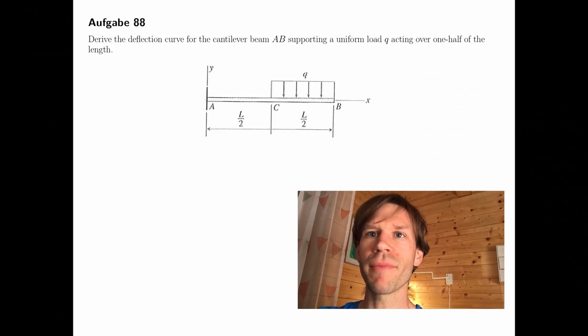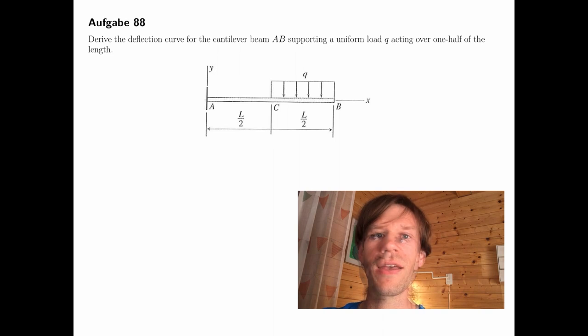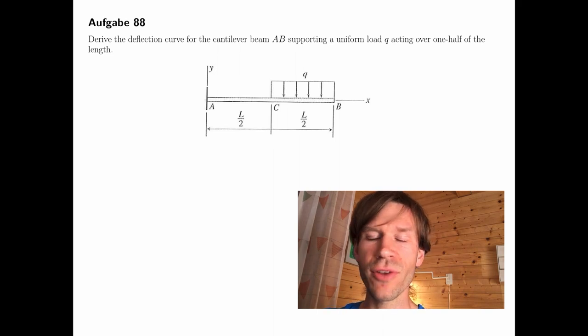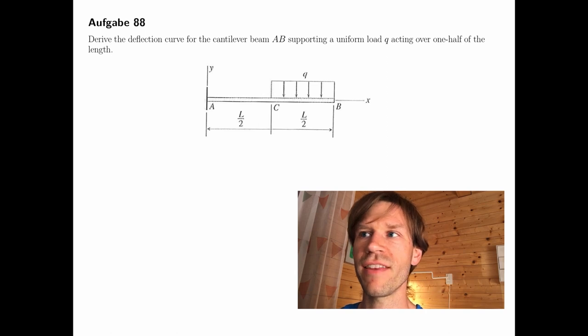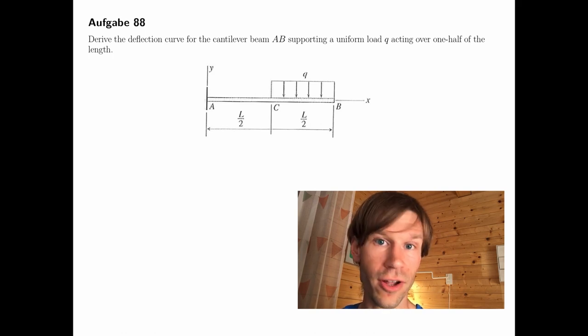Another example problem given in English is this cantilever beam AB. It's again loaded by a uniform load Q acting over one-half between C and B. We should derive the deflection curve for this beam and then calculate all the constants.